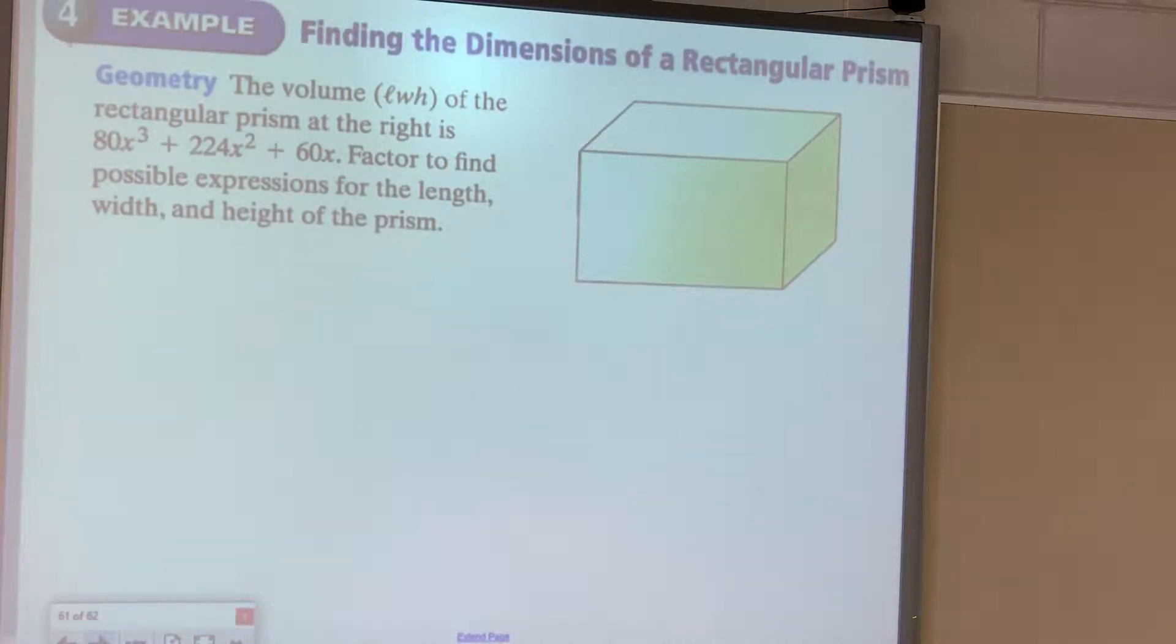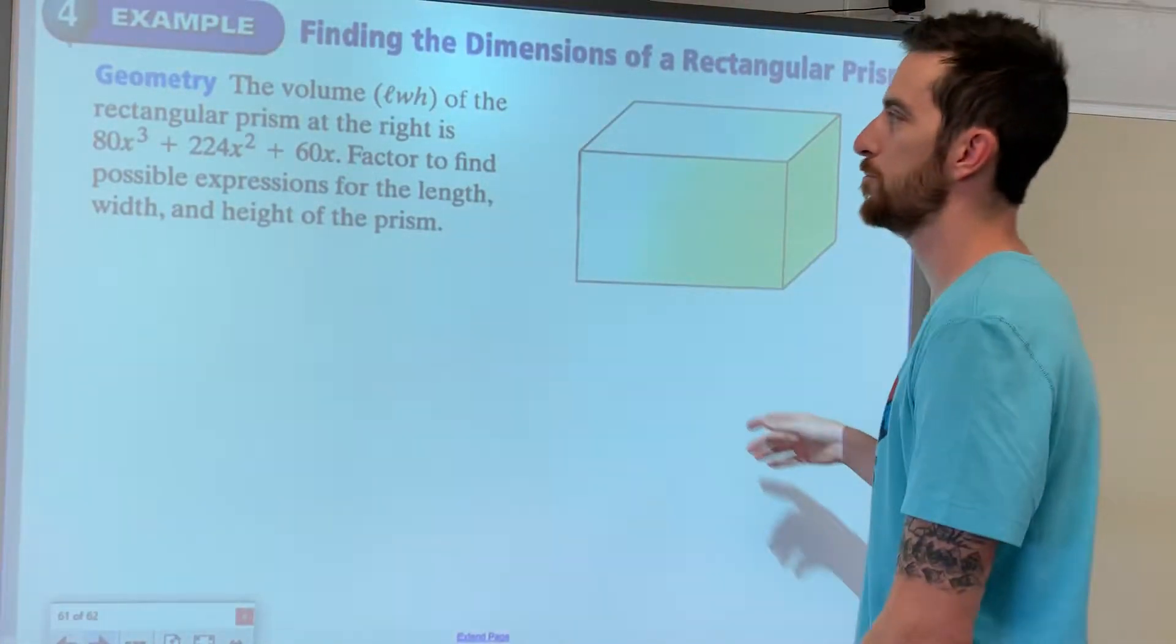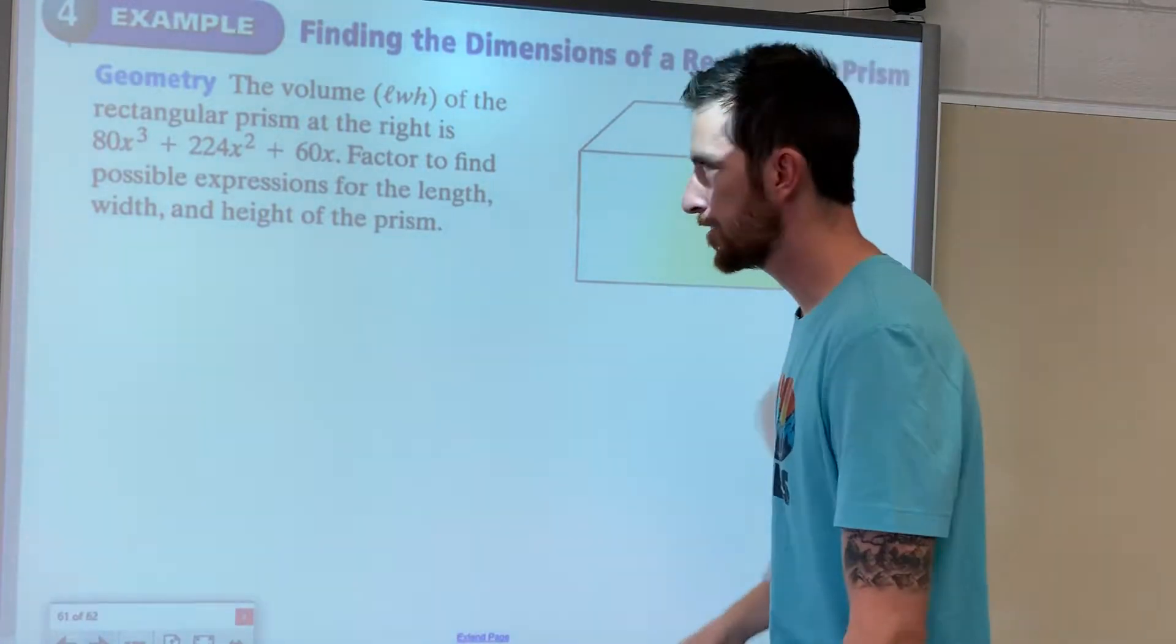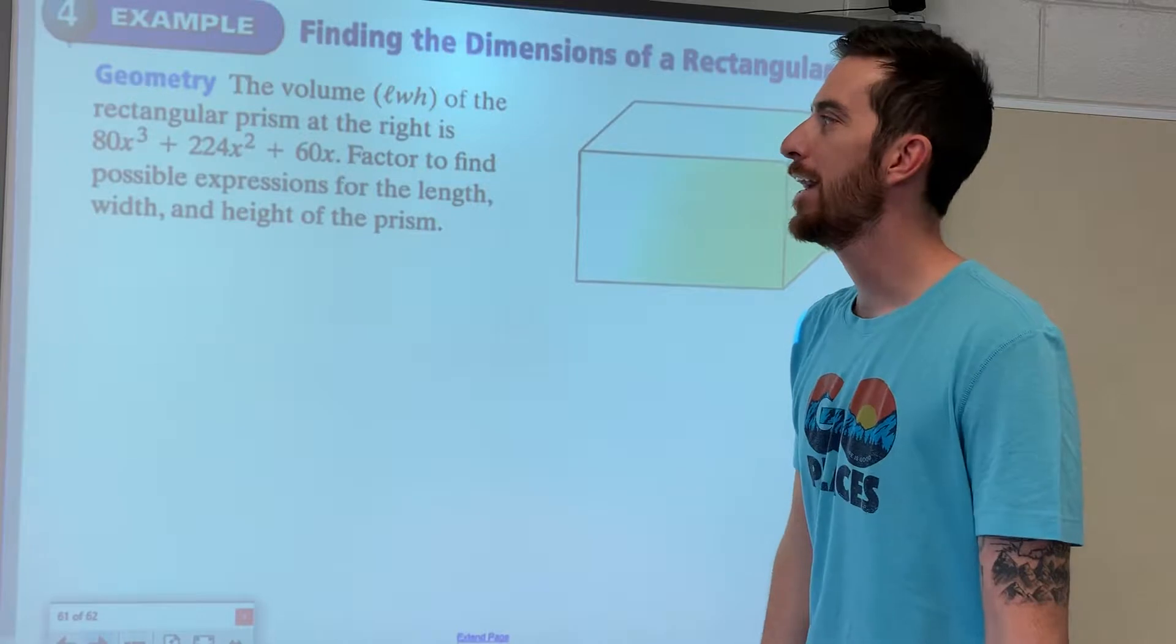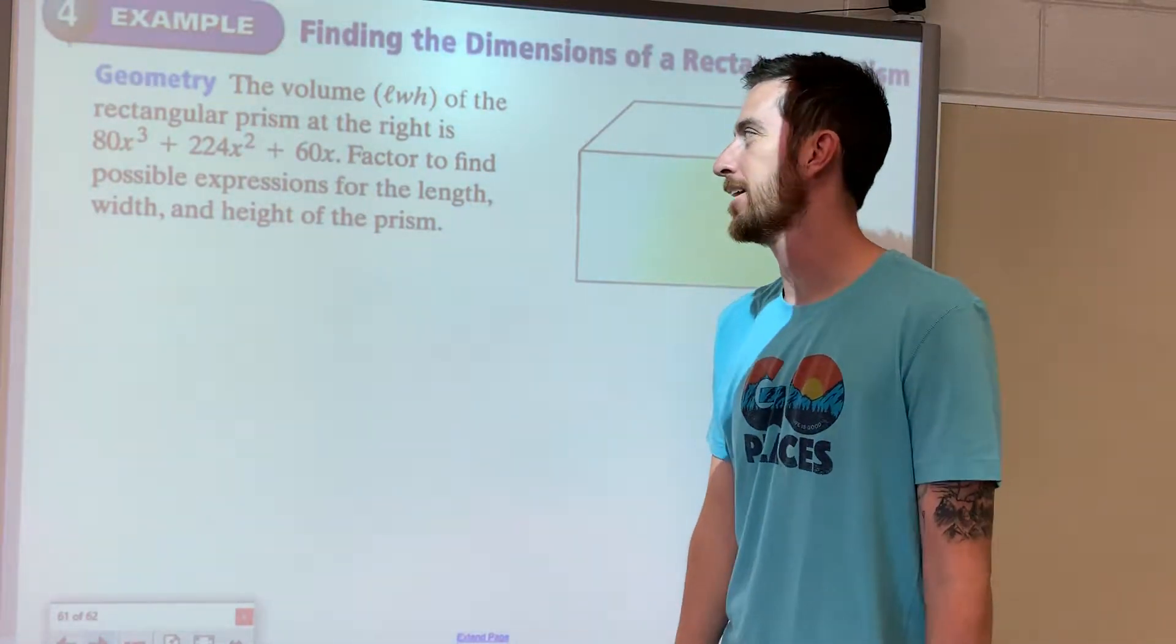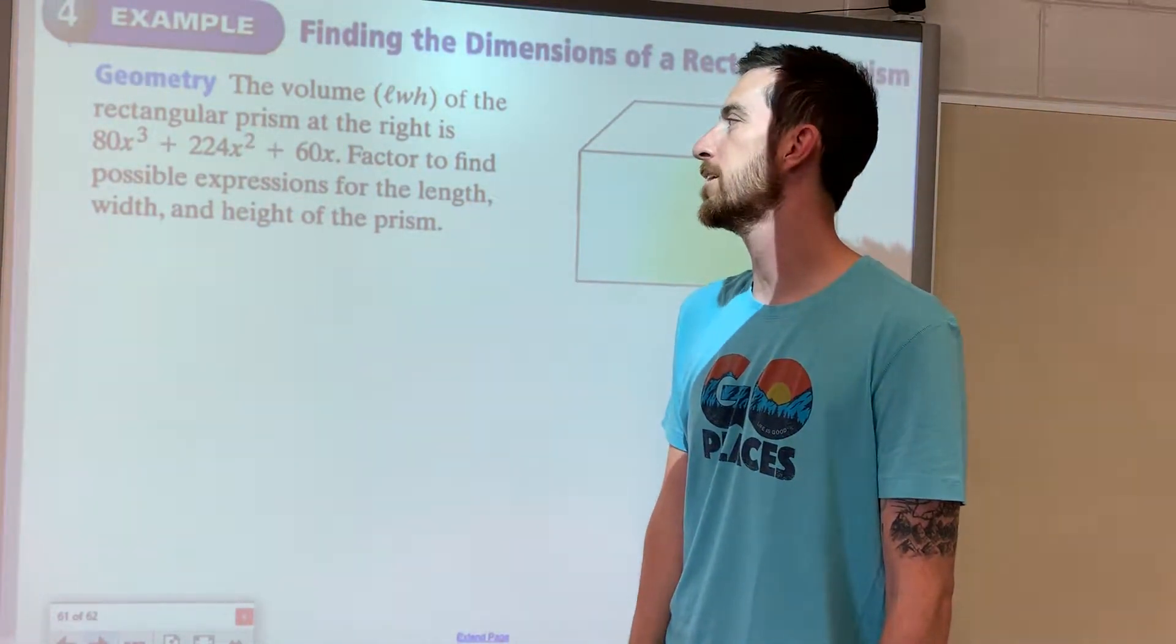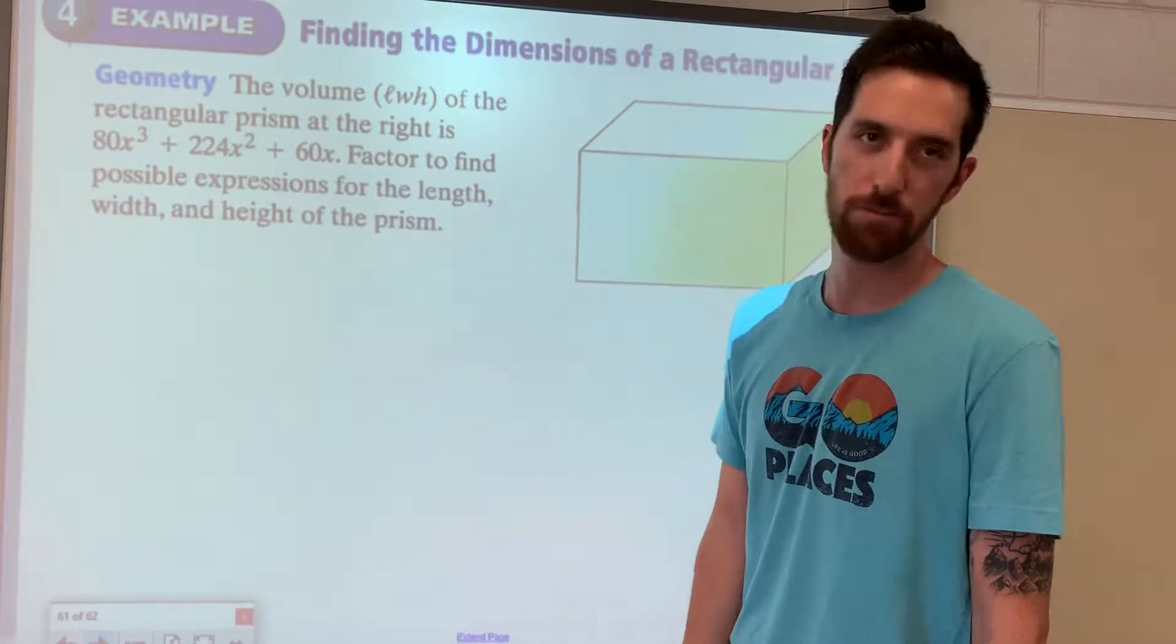The volume, length times width times height, of the rectangular prism at the right is 80x³ plus 224x² plus 60x. Factor to find possible expressions for the length, width, and height of the prism.